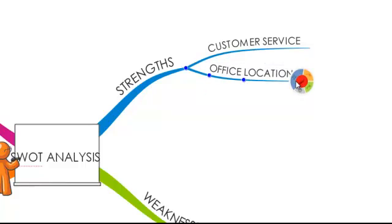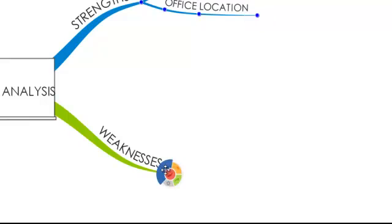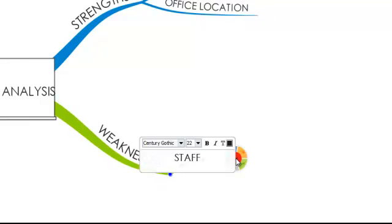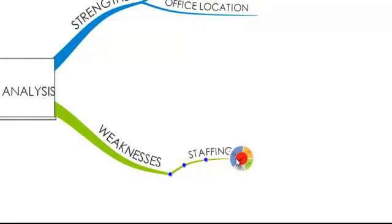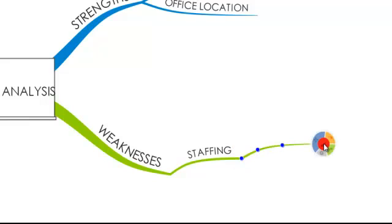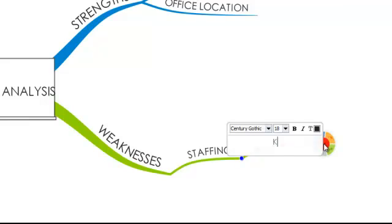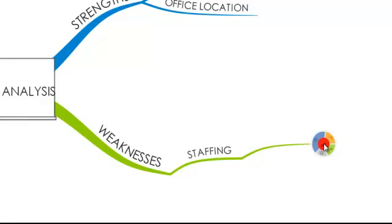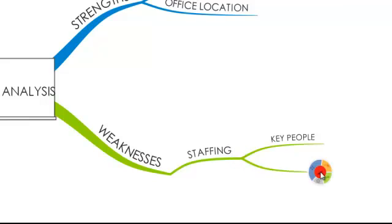Moving to our Weakness branch, we might add Staffing as one of our weaknesses, and then build further by drawing new branches to add further detail about our Staffing weaknesses. In this example, perhaps we are missing key personnel, or maybe we have a lack of new talent within the business.